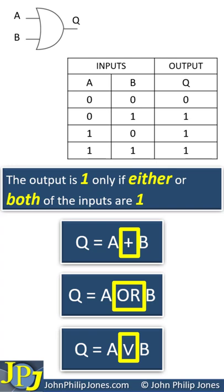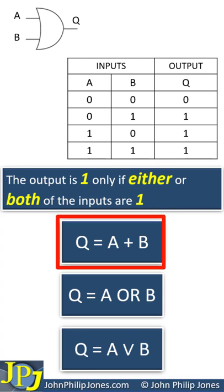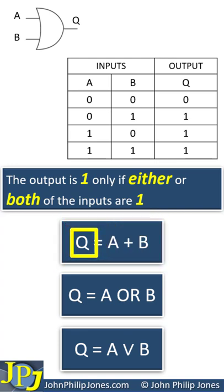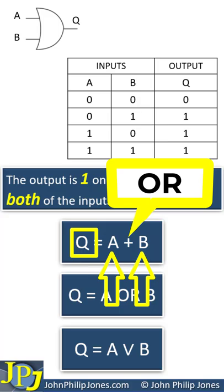It is, however, usual when you're dealing with logic gates to use this Boolean representation, where this is the output and these are the inputs.